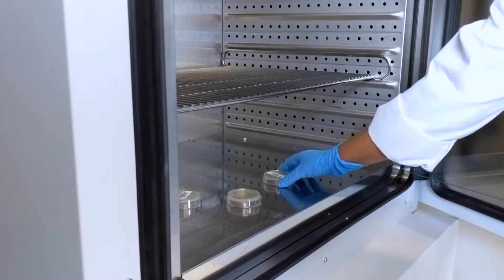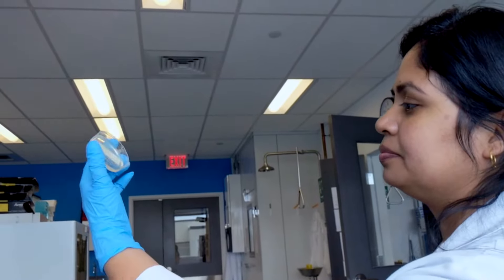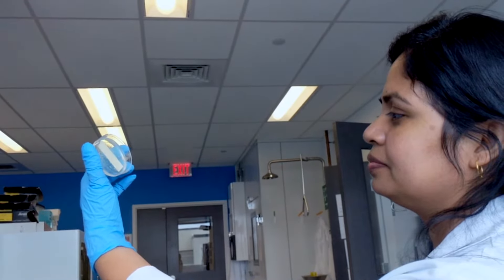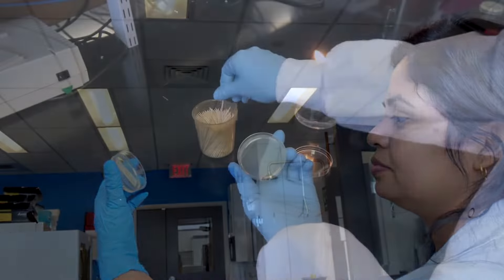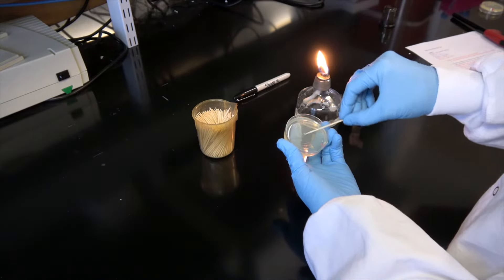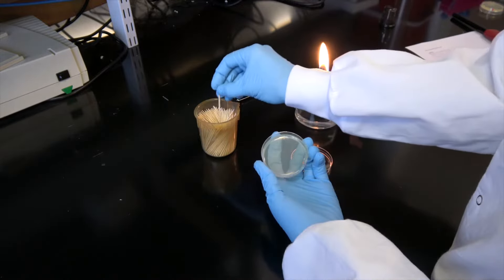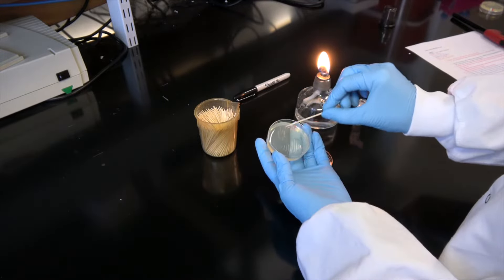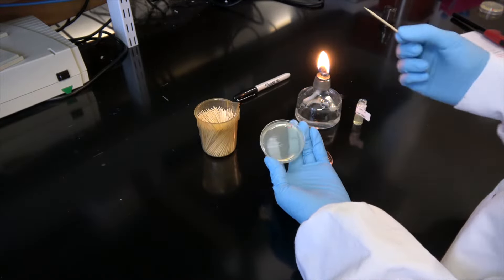After overnight incubation, inspect your plates for visible colony growth. Remember, your control plate should have no visible colonies present. If your sample plate has colonies that are too close together, you can pick a clump of cells and streak for single colonies on a new plate. See our streaking for single colonies video for more information.